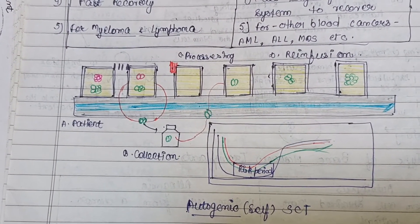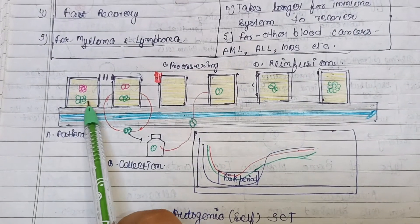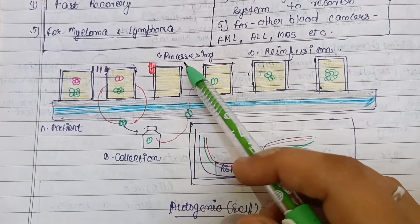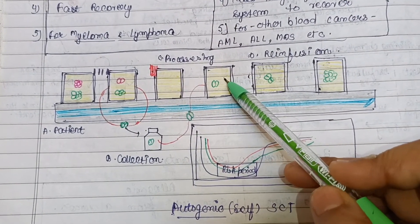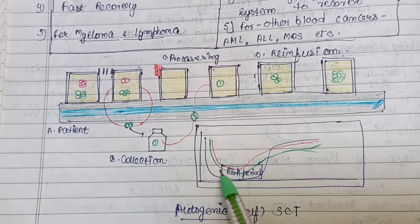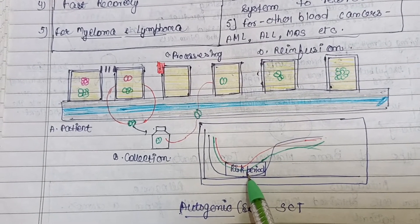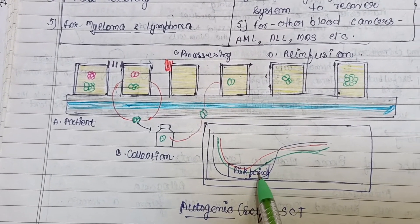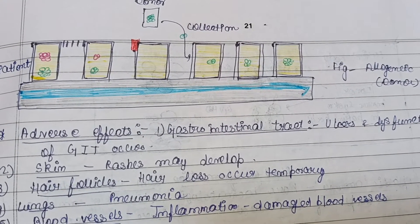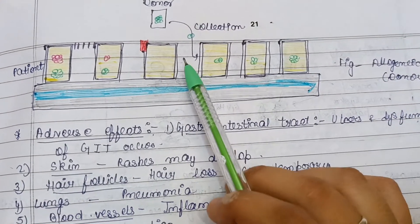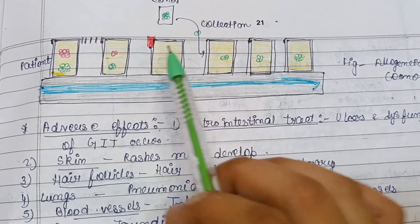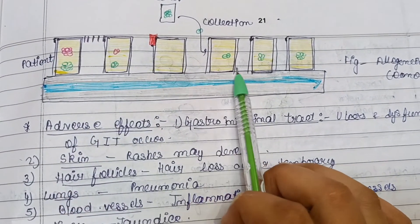A diagram illustrates the autologous transplantation process: collection of stem cells from the patient, processing, and then transplantation back. A graph shows the risk period is very low compared to allogeneic transplantation. Another diagram represents the allogeneic process: bone marrow collected from a donor, processed, and then the patient is treated and healed.